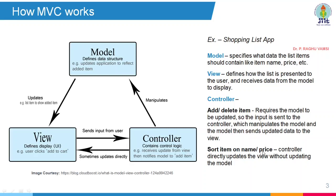Sorting by name is an example where the controller directly updates the list view without updating the model — for instance, sort by popularity, rating, or price from low to high or high to low. This is the MVC architecture. The reason we discuss MVC before ReactJS is that ReactJS is a framework that helps us work with the view of the web application — it supports only the view part of the MVC architecture.